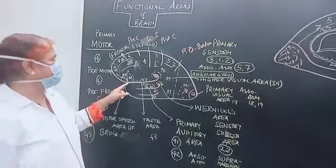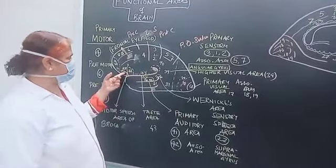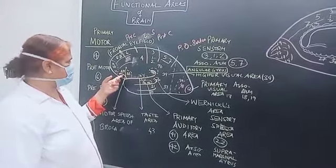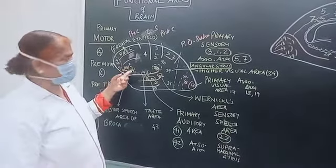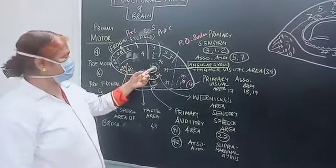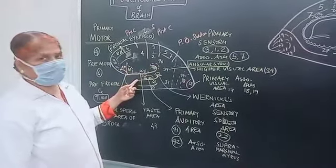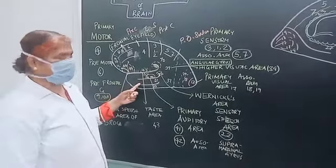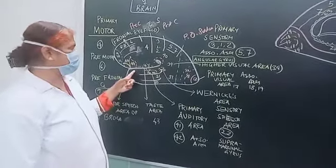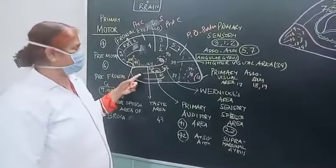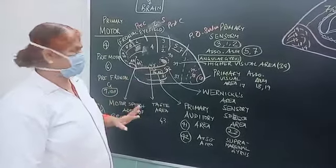These are the horizontal and ascending limb of the lateral sulcus. This is the posterior ramus. This is the superior temporal sulci and inferior temporal sulcus. This is the superior temporal gyrus, middle temporal gyrus, and inferior temporal gyrus.